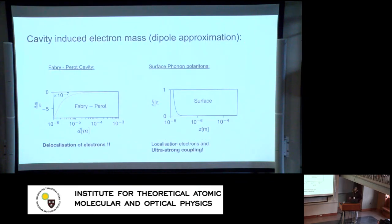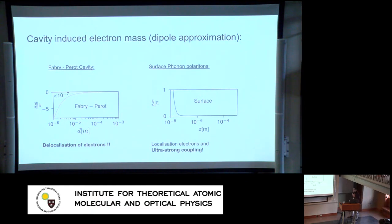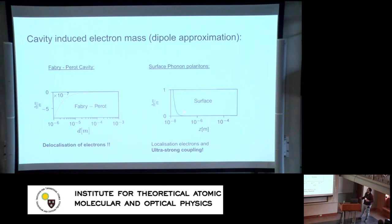Finally, we compute the cavity-induced electron mass renormalization within the dipole approximation. In a Fabry-Perot cavity we find delocalization of electrons, arising from the reduction in vector potential fluctuations. However, for surface phonon polaritons — where rather than reshuffling spectral weight you are effectively adding new modes — we see localization where the mass gets enhanced significantly. As I get closer and closer to the surface, the change in mass becomes of the order of the mass itself, achieving the ultra-strong coupling regime, while in the Fabry-Perot case the effect is only around 10^-6.